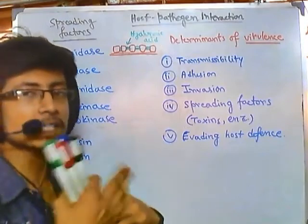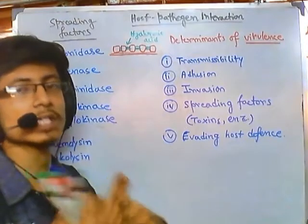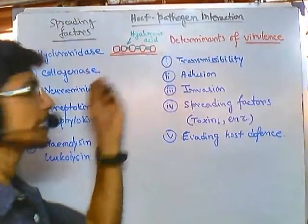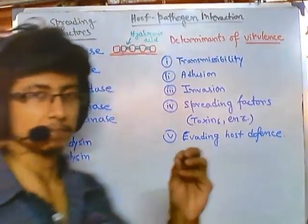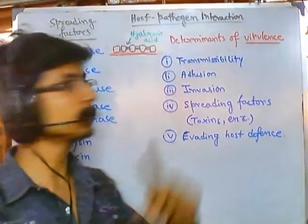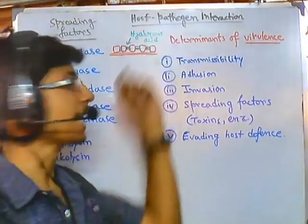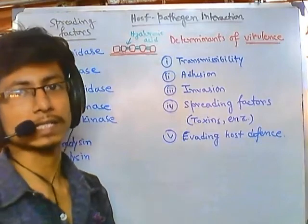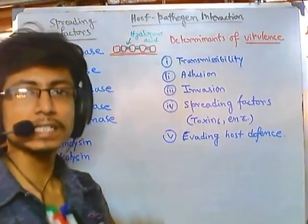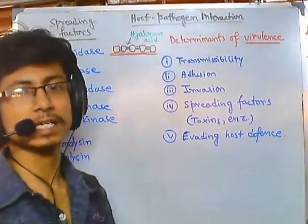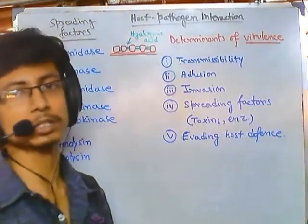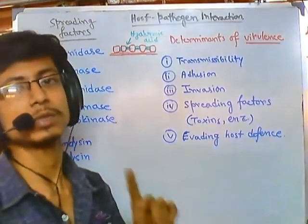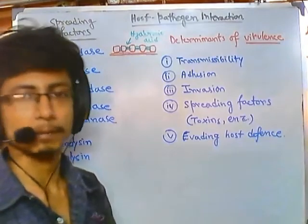Without hyaluronic acid, the integrity of the host cells will be lost. Hyaluronidase is an enzyme that cleaves this hyaluronic acid - so if it cleaves the hyaluronic acid, it disintegrates the cell, disintegrates the tissue, and the cell dies and the tissue is damaged.